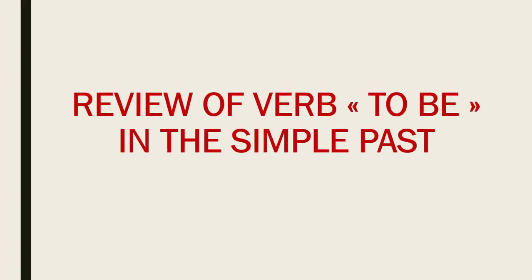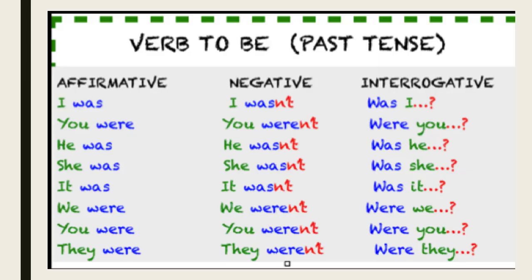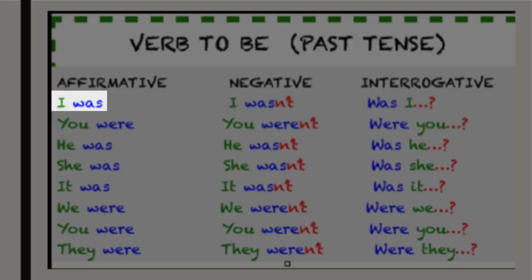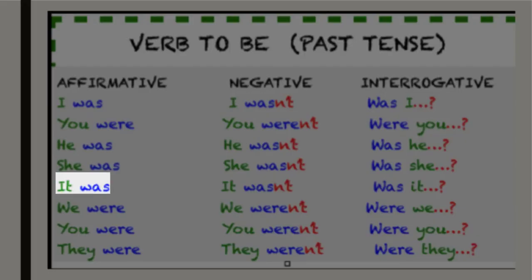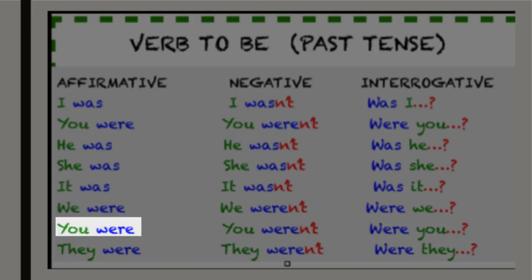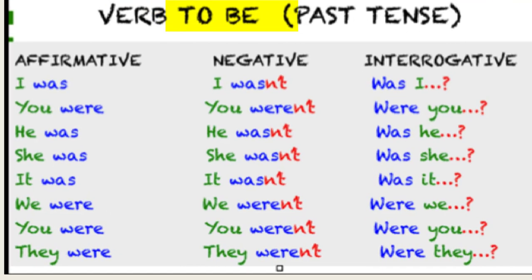Let's start with the review of verb to be in the simple past. Affirmative: I was. You were. He was. She was. It was. We were. You were. They were.